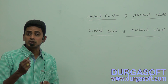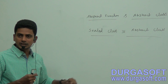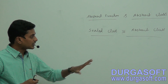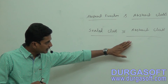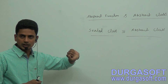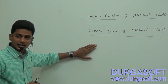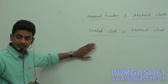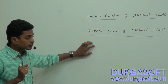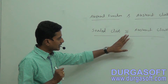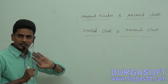Sealed class can contain virtual functions. Sealed class can contain non-abstract functions, that is virtual functions. Abstract class can contain non-abstract functions and abstract functions. Sealed class cannot contain abstract functions. Sealed class can contain only virtual functions. This is the difference between sealed class and abstract class, and what abstract function and abstract class mean.